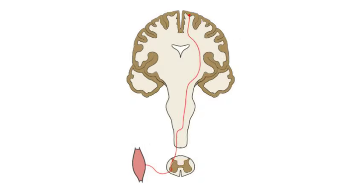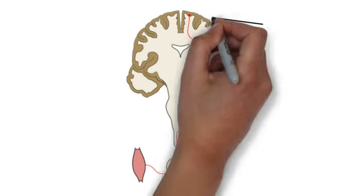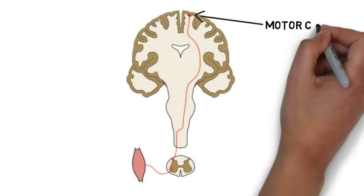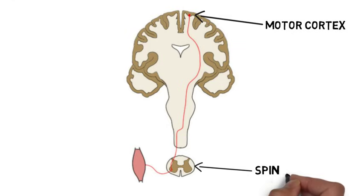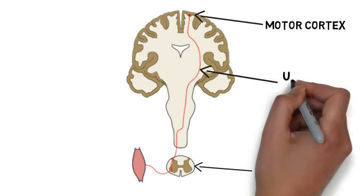The corticospinal tract is a major tract that carries movement-related information from the motor cortex to the spinal cord. The neurons that travel in the corticospinal tract are called upper motor neurons.